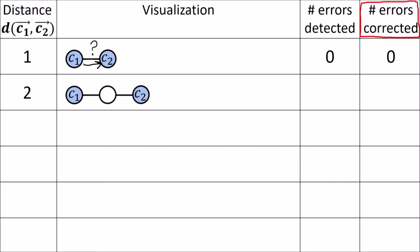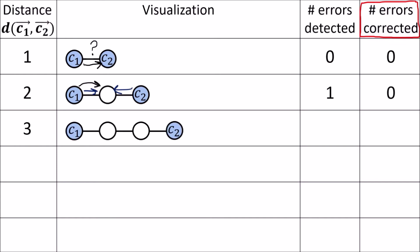If the distance is two, then a one-bit error will bring us to an invalid code word, so we can detect that a one-bit error has happened, but we can't actually correct it because the error could have taken us away from C1 or away from C2 and there's no way to tell where we started from. For minimum distance three, we can detect up to two error bits without correction, and if we're trying to correct errors we can correct a one-bit error since we know a one-bit error here means we came from C1 and a one-bit error here means we came from C2.